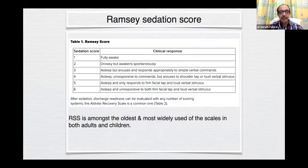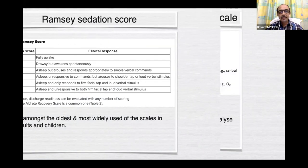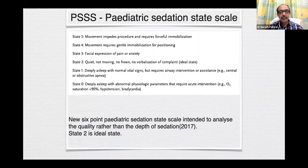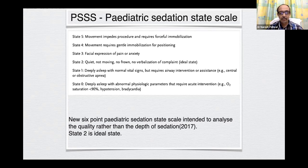Ramsey Sedation Score is amongst the oldest and most widely used scales in both adults and children — a 6-point scale. The Pediatric Sedation State Scale is a 6-point scale intended to analyze the quality rather than the depth of sedation, in contrast to the University of Michigan Sedation Scale. State 2 is considered the ideal state for procedural sedation.